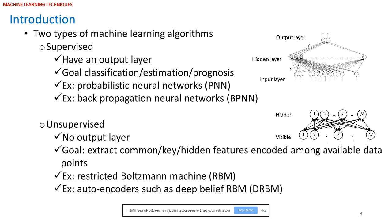There are basically two types of machine learning algorithms. First is supervised learning and the second is unsupervised. Supervised learning algorithms have an output layer and the goal is classification, estimation, or prognosis — for example, is that tiger in the category of cats or ducks? In unsupervised learning there is no output layer. They identify and separate common and uncommon characteristics among data points. Instead of having an image with 100,000 pixels, unsupervised learning extracts patterns and features among those pixels so we have fewer features representing the big-size image.